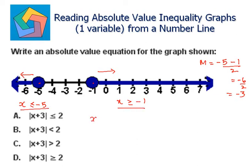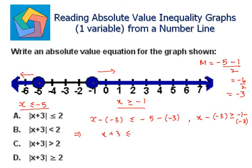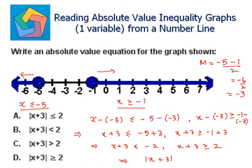So x minus negative 3 is less than or equal to negative 5 minus negative 3, and x minus negative 3 is greater than or equal to negative 1 minus negative 3. This implies x plus 3 is less than or equal to negative 5 plus 3, and x plus 3 is greater than or equal to negative 1 plus 3. This implies x plus 3 is less than or equal to negative 2, and x plus 3 is greater than or equal to 2. This implies the absolute value of x plus 3 is greater than or equal to 2.